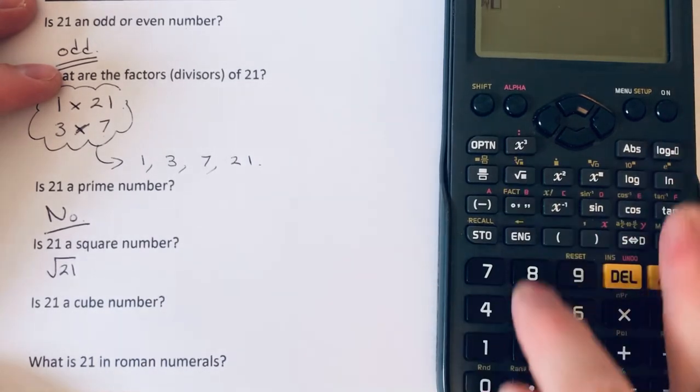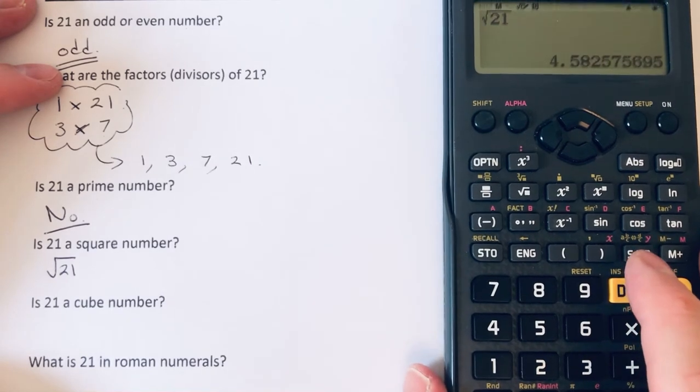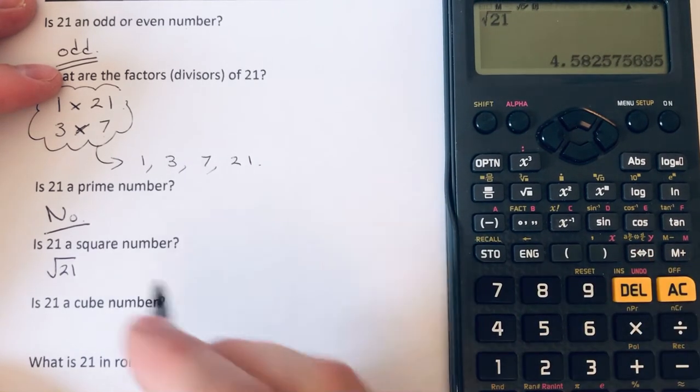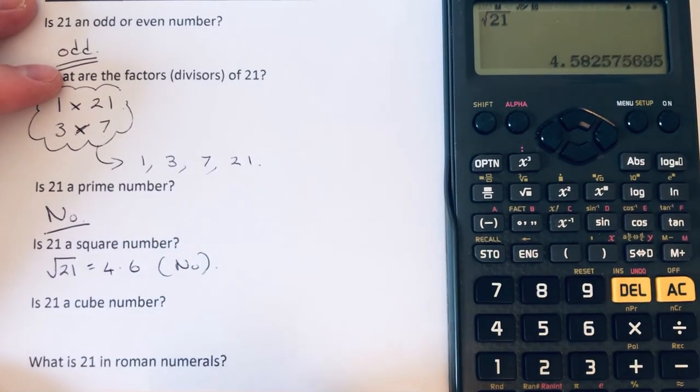The square root of 21 doesn't give a whole number—it's 4.6 to 1 decimal place. So the answer is no.